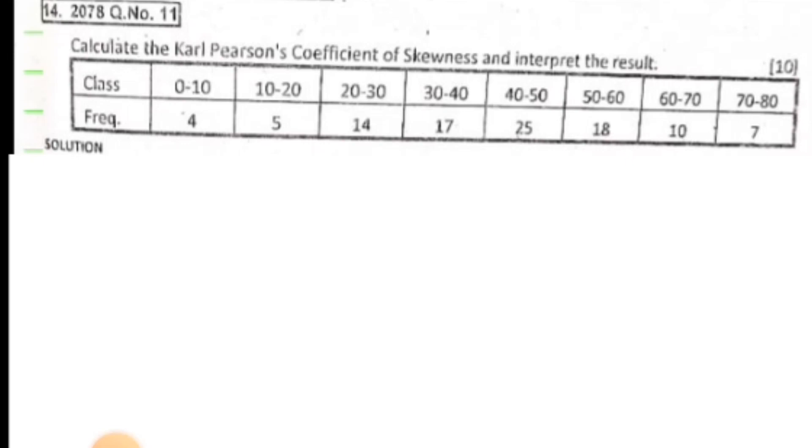The question is: calculate the Karl Pearson's coefficient of skewness and interpret the result. The class frequency distribution is 0-10, 10-20, 20-30, 30-40, 40-50, 50-60, 60-70, 70-80.